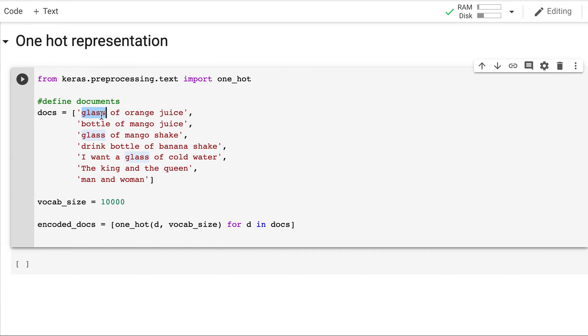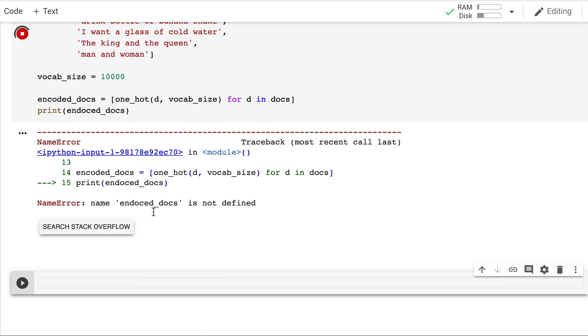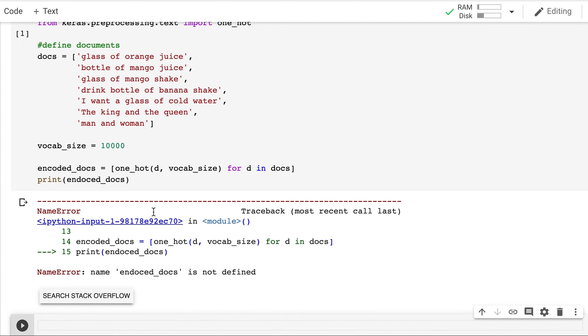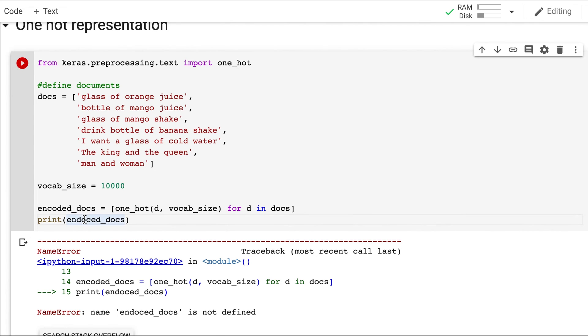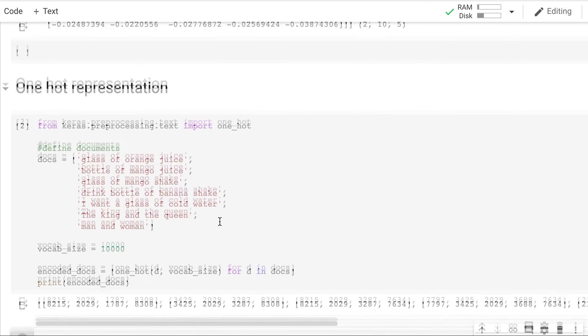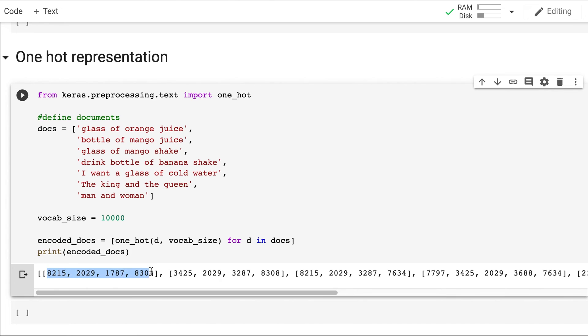It will not print 10,000 cross one for each word. It will just assign a value. For example, 6,000 would mean every index in the vector 10,000 cross one is zero, except one at position 6,000. So now let's print the encoded docs. So, this gives us the same list of documents, but now as a one hot representation.